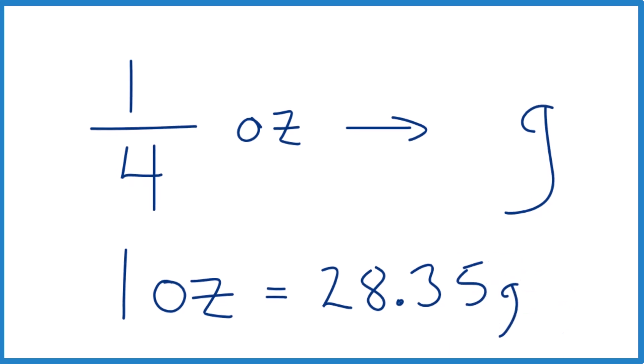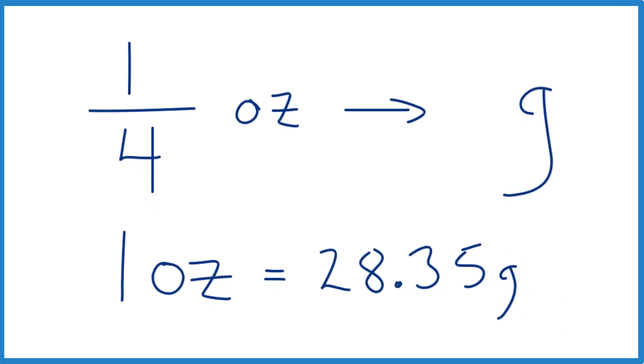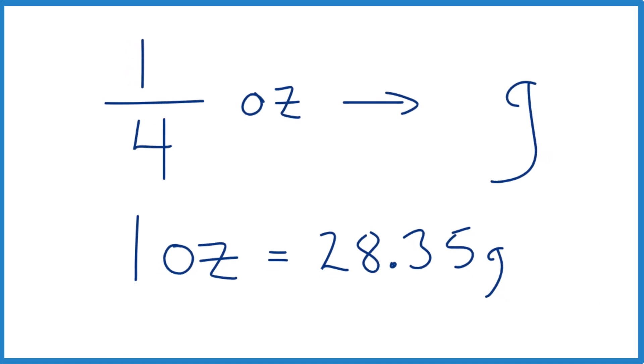If you have a really accurate electronic balance, you might want more digits. So if one ounce is 28.35 grams, one-fourth, we can just divide both sides by four.